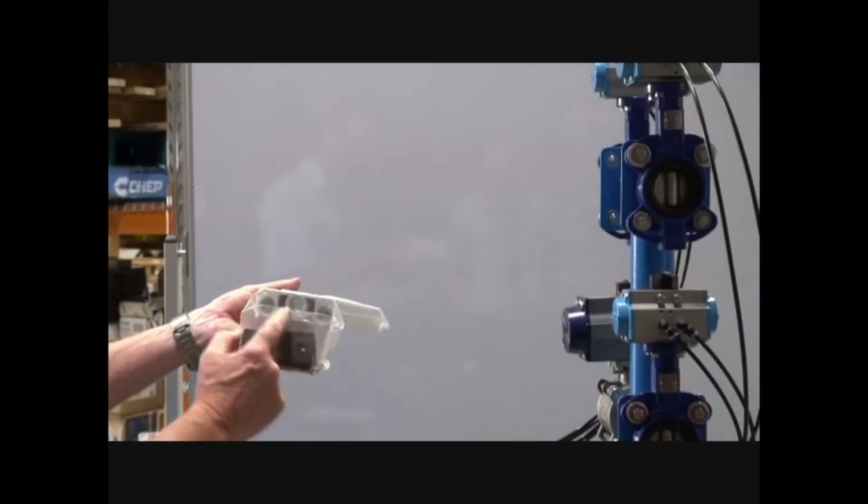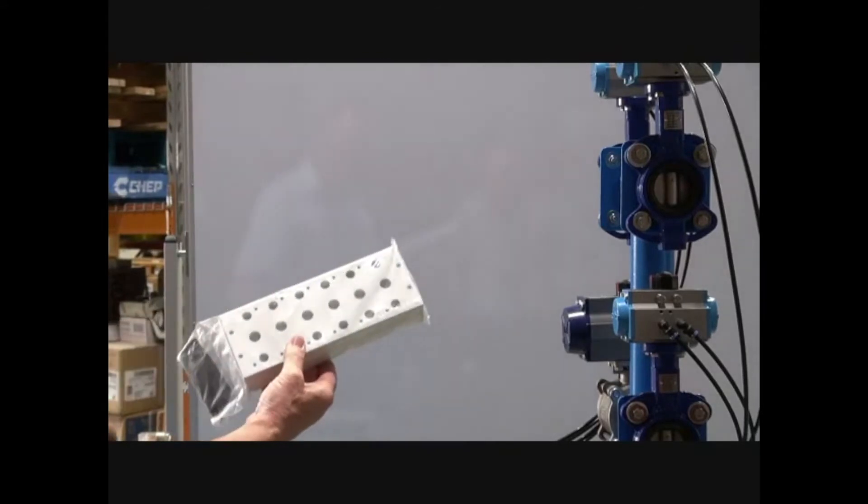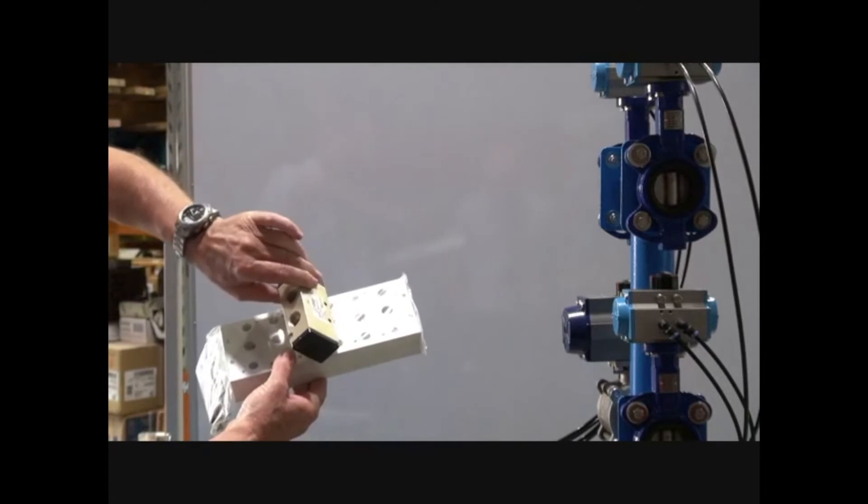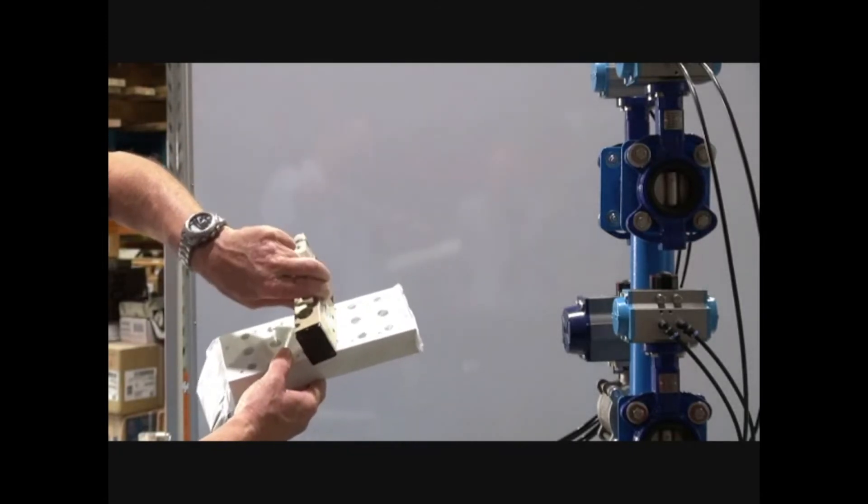Manifolds go up to 1/2 inch BSP for the bigger valves. This is a 1/2 inch operated valve, 1/2 inch BSP ported, single solenoid.